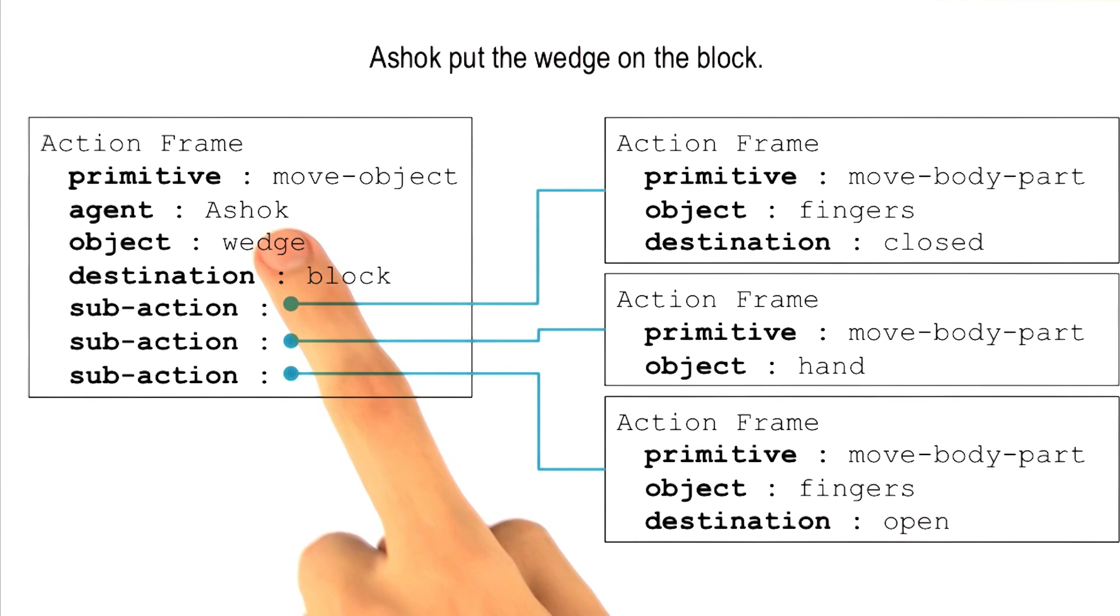So if we can decompose move object into a series of move body part actions, was move object really a primitive action? That's a valid question, David.